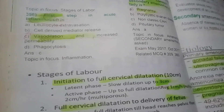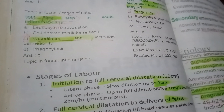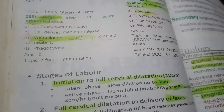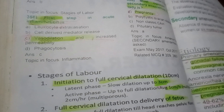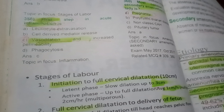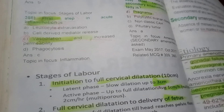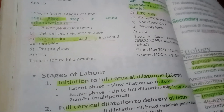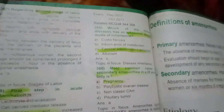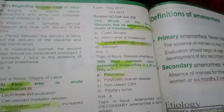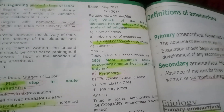The first step in acute inflammation involves vasodilation and increased vascular permeability. After vasodilation and increased permeability, leukocyte extravasation occurs with cell-derived mediator release, followed by phagocytosis.